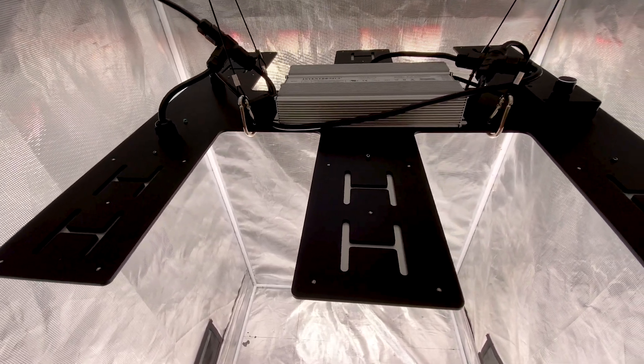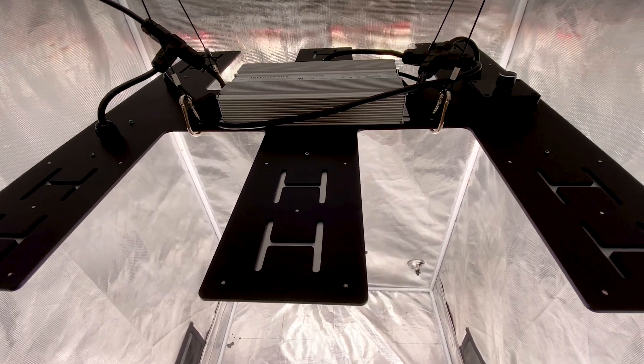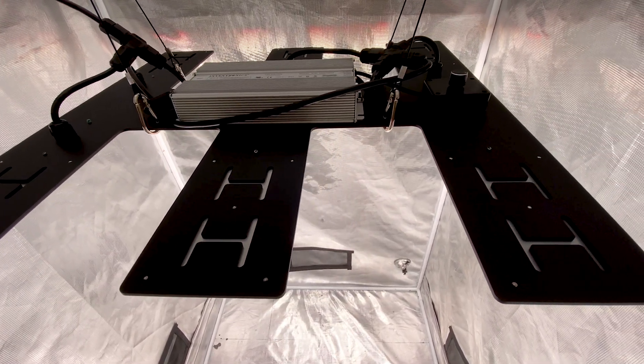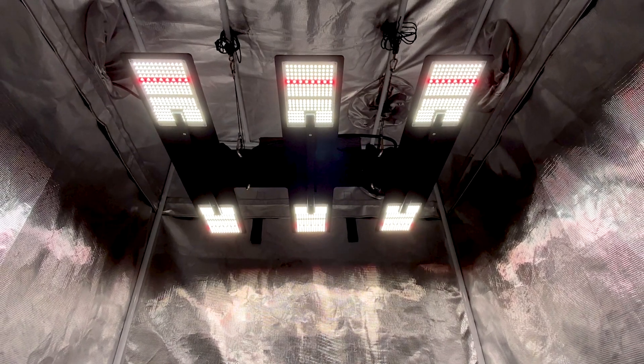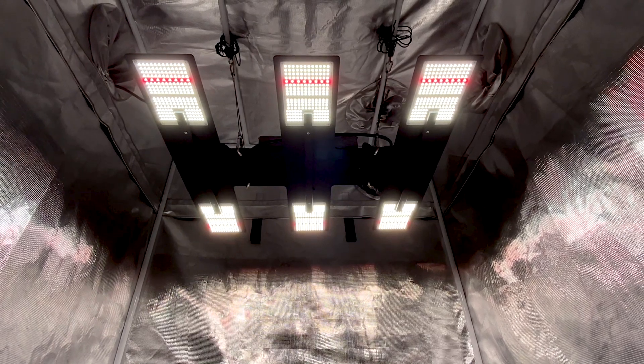Expect a heat output of 2,050 BTUs per hour from this fixture or about 40% less heat than a 1,000 watt HPS. The light is assembled in the USA just like HLG's other fixtures and it comes with a three-year manufacturer's warranty.